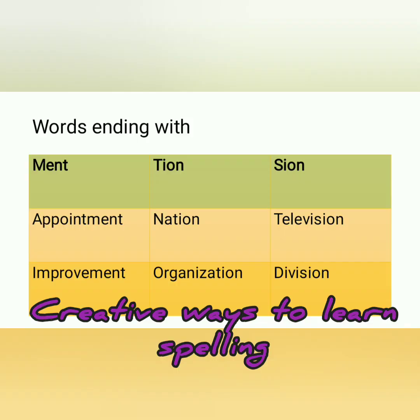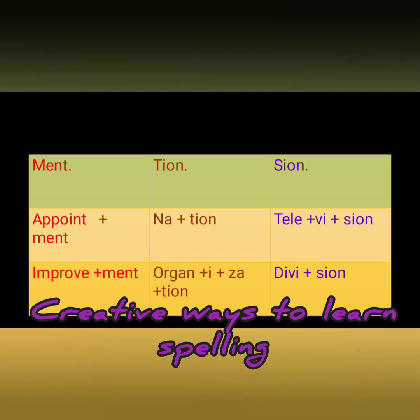The next method uses a table format. You can see I have divided a table into three columns: 'ment', 'tion', and 'sion'. Words include appointment, improvement, nation, organization, television, and division. I have tried to highlight these endings with different colors. 'Appoint' plus 'ment' gives 'appointment'; 'improve' plus 'ment' gives 'improvement'.